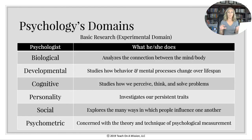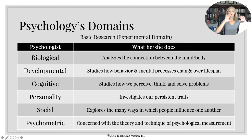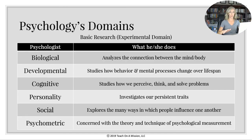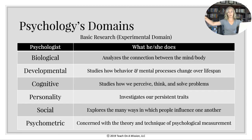Now let's shift into the domains. Basic research and applied research are both essentially themes of what you would do if you got a degree of some sort in psychology. Basic research means you're going into psychology to do research so that other people can use that research to benefit human beings. If you're going into the biological, cognitive, social, or psychometric domain, you're just doing the research.